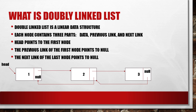For example, in this linked list, the head node's value is 1. Node 1's next node takes us to node 2, and node 2's next node brings us to node 3. Node 3's next node is null, and it is the last node, or the tail node, in the doubly linked list. Node 1's previous node is null, node 2's previous node is the node with value 1, and node 3's previous node is the node with value 2.